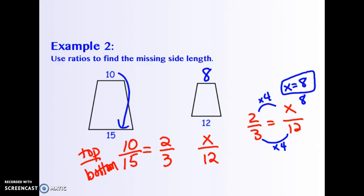Notice 10 fifteenths is 2 thirds, and 8 twelfths is also 2 thirds. So these are going to have the same ratio for their missing, the same ratio helps us find the missing side lengths.